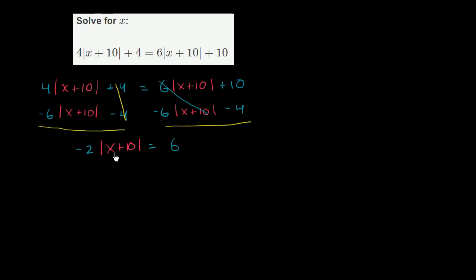Now we want to solve for the absolute value of x plus 10. So let's get rid of this negative 2. We can do that by dividing both sides by negative 2. You might realize everything we've done so far is just treating this red expression as almost just like a variable. And we're going to solve for that red expression and then take it from there. So negative 2 divided by negative 2 is 1. 6 divided by negative 2 is negative 3. So we get the absolute value of x plus 10 is equal to negative 3.